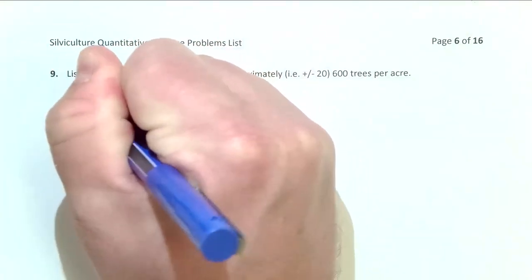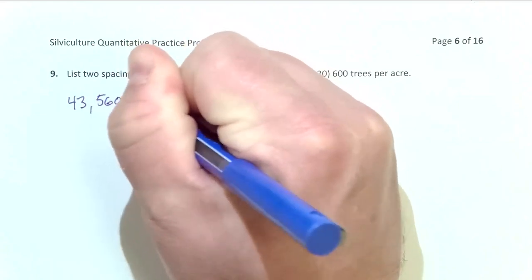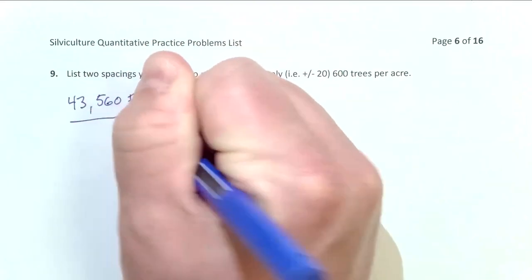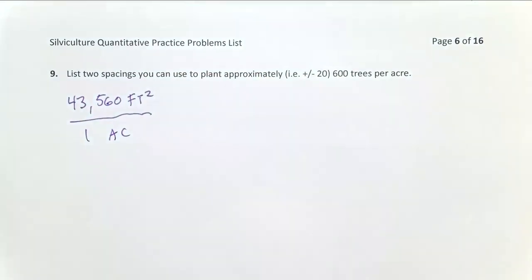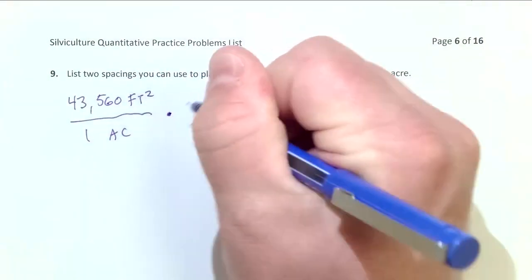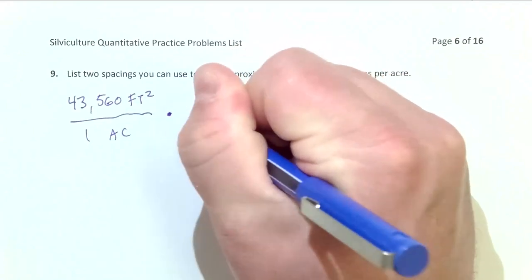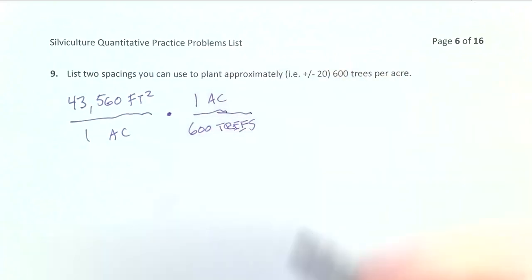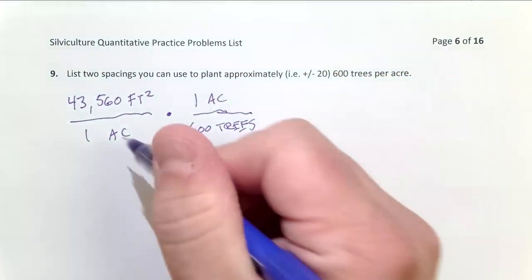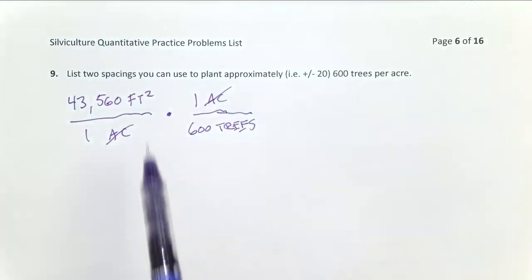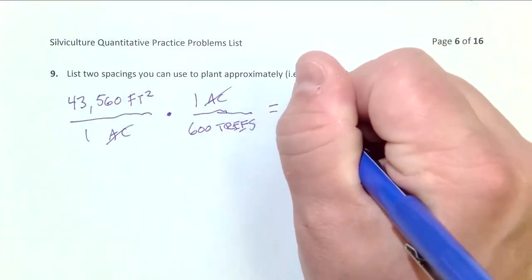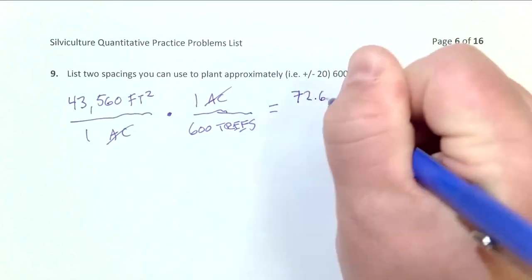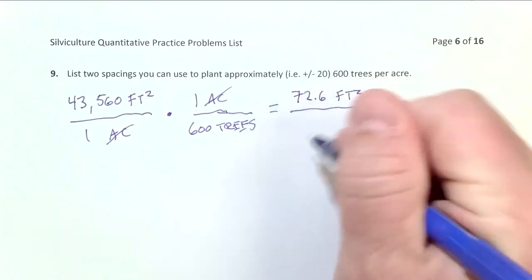I'll take 43,560 feet squared in one acre of land. And I know I want 600 trees on that acre, so I'll take that one acre and put 600 trees on it. So I can see my units cancel out. I've removed acres here and here, and I'm left with units of feet squared per tree. And when I do that math, 43,560 divided by 600, it tells me that I'm going to get 72.6 feet squared for each one tree.